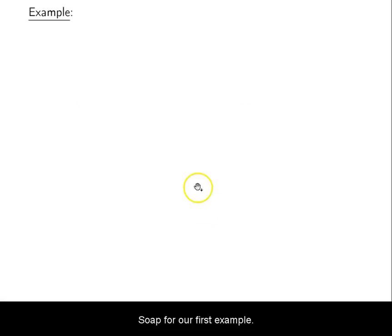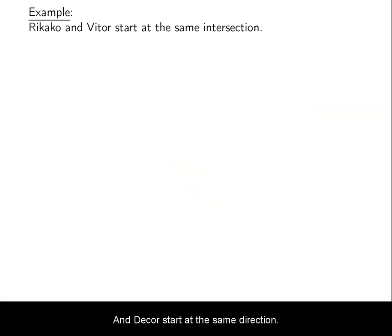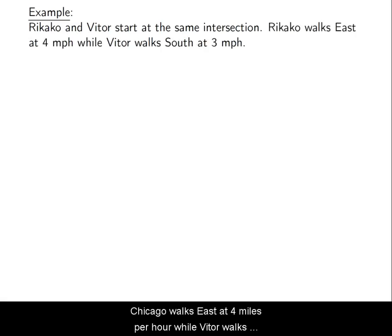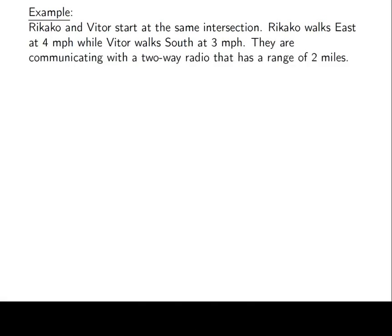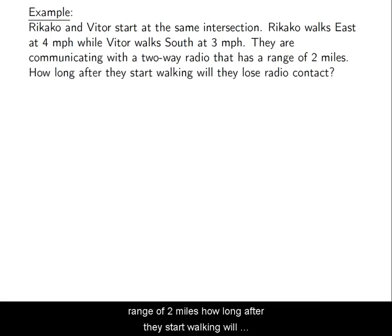For our first example, we have Rikako and Vitor start at the same intersection. Rikako walks east at four miles per hour while Vitor walks south at three miles per hour. They're communicating with a two-way radio that has a range of two miles. How long after they start walking will they lose radio contact? So we read this a couple of times and then we start to try to draw a picture. Rikako and Vitor start at the same intersection, they're at the same place. So to me, I would probably draw a dot.